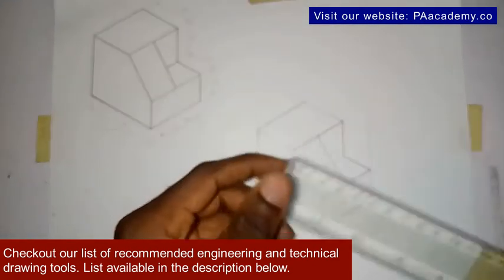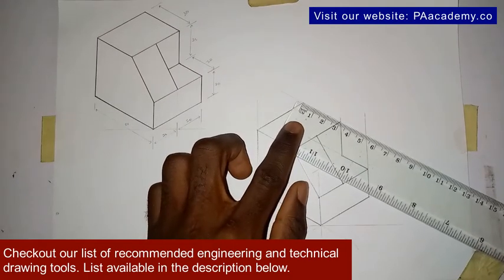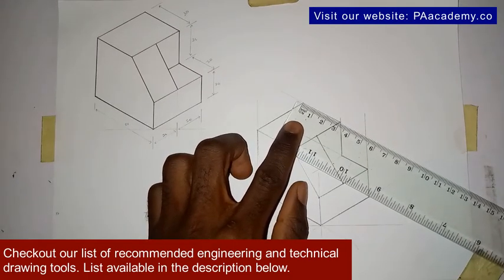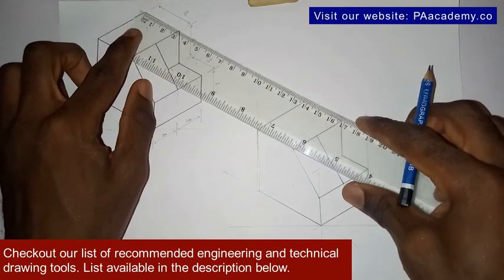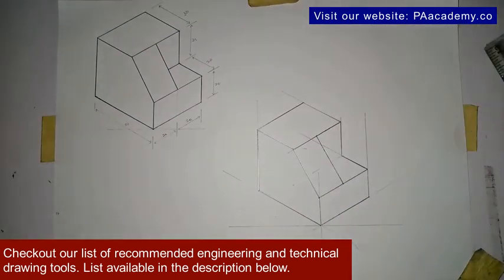Now let's look at something. Remember when we are drawing this top, we didn't measure it. But by virtue of isometric drawing, you can see this is giving us 30. The same 30 that we have here without even measuring it when we are constructing. So those are some of the things that will let you know if you are actually correct in your drawing. So let me go ahead and add the dimensions.